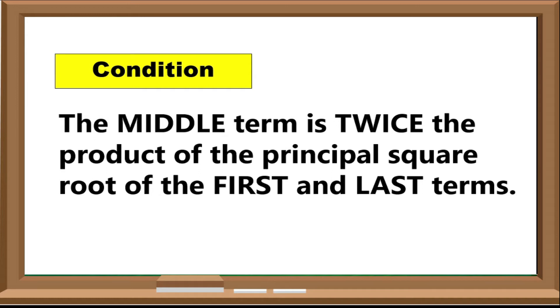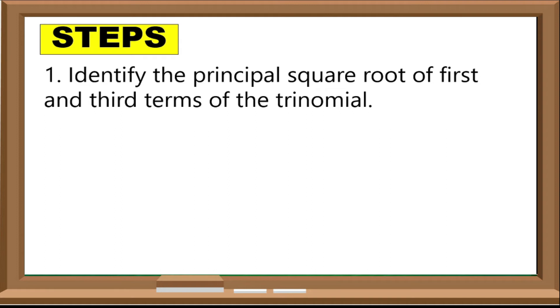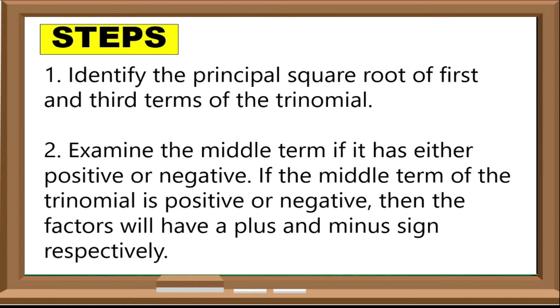If the condition is satisfied, you can now factor the expression using perfect square trinomial. Here are the steps: first, identify the principal square root of the first and third terms of the trinomial. Second, examine the middle term — whether it has a positive or negative sign. If the middle term is positive or negative, then the factors will have a plus or minus sign respectively.